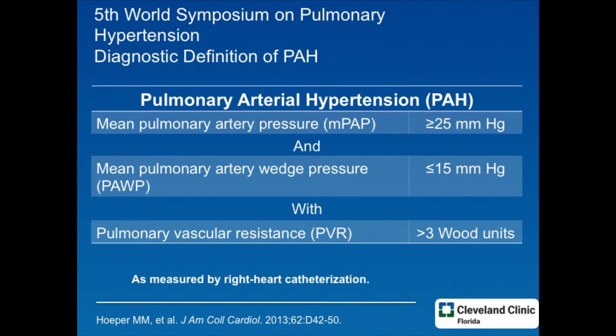By now we're familiar with this set of definitions, and any treatment of pulmonary hypertension and COPD still requires us to follow this definition. Pulmonary hypertension has to exist — mean pressures have to be over 25. It should not come from the left side of the heart, so the wedge pressure or pulmonary occlusion pressures have to be less than or equal to 15. And there has to be pulmonary vascular resistance of at least over three Wood units.